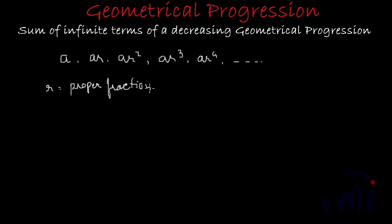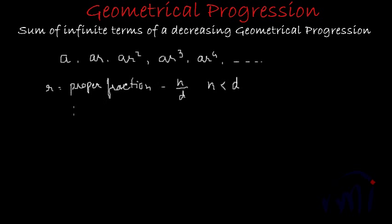A proper fraction is in the form of n by d, where n is the numerator and d is the denominator. It is called a proper fraction when the value of the numerator is less than the denominator. If the value of r is a proper fraction, then the value of each next term will be less than the value of the previous term.